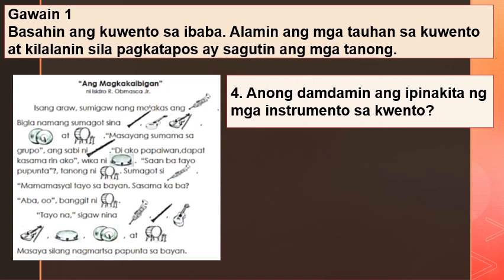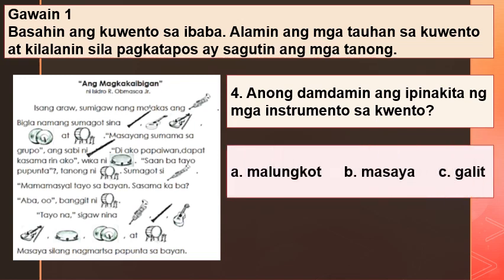Ikaapat na bilang: Anong damdamin ang ipinakita ng mga instrumento sa kwento? A. Malungkot, B. Masaya, C. Galit.